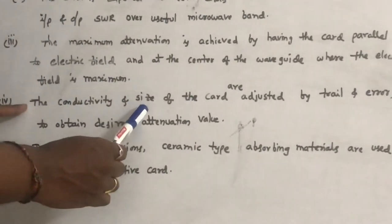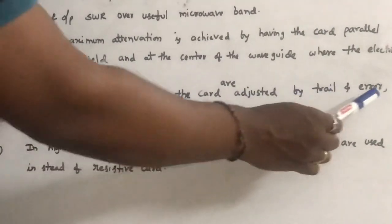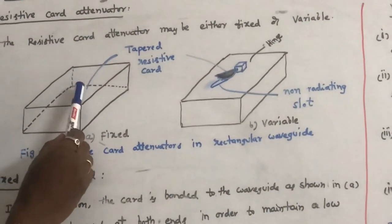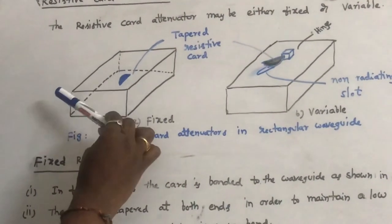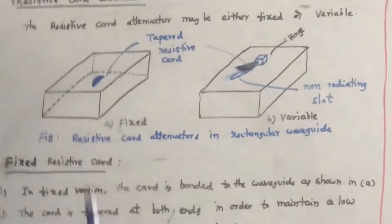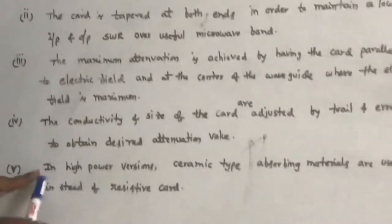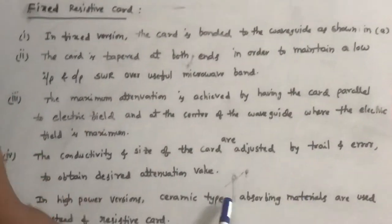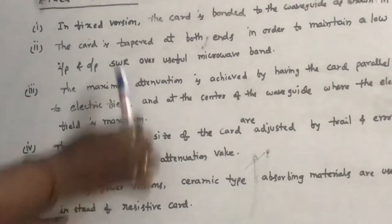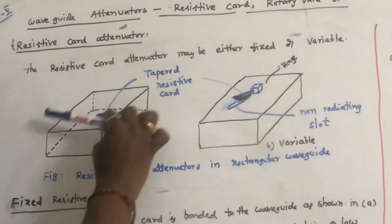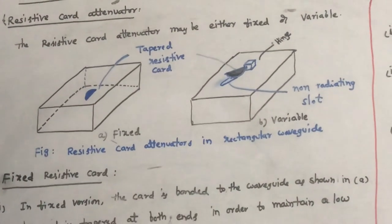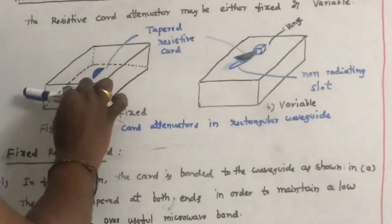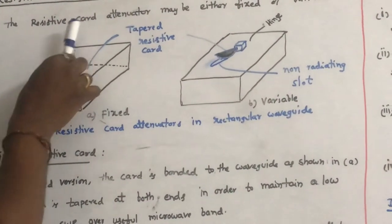The conductivity and size of the cord are adjusted by trial and error to obtain the desired attenuation value. In high power applications, in order to absorb very high power, ceramic type absorbing materials are used instead of resistive cords. The resistive cord absorbs a certain portion of the power when the electric field is parallel to it.